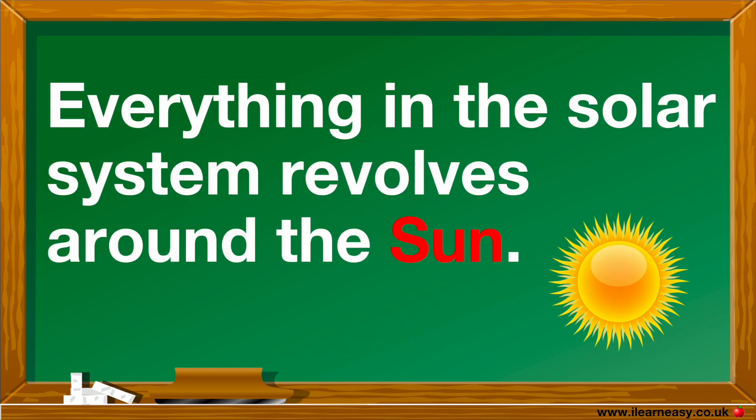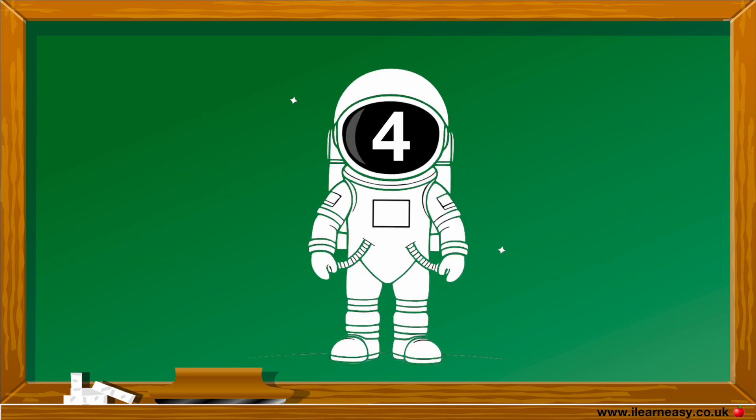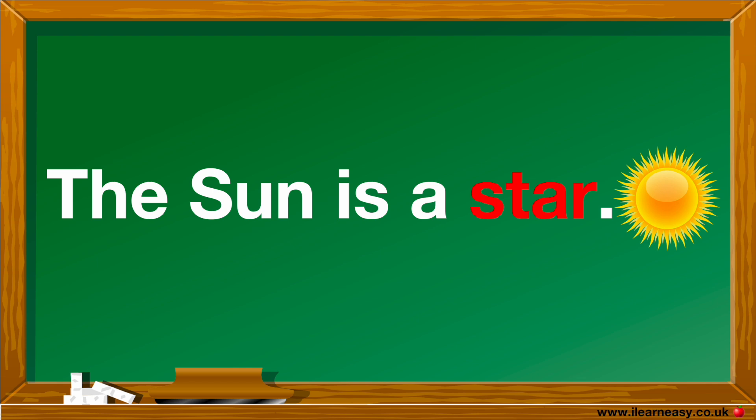Everything in the solar system revolves around the sun. It's at the center of our solar system. The sun is a star. It's a huge ball of gas that gives off light and heat.